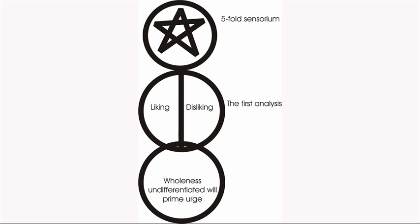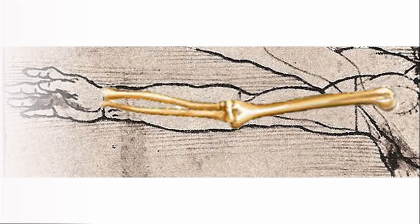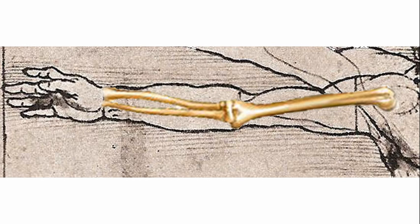We have this wholeness — this undifferentiated will, this prime urge, so difficult to get at — then we have the liking and disliking of it, the first analysis, then the five-fold sensorium of it. We have the same thing in the upper arm bone: the part nearest the body is the most unified, then the two bones — the ulna and the radius — which are the bones of choice. You'll find that when people are making up their minds, they frequently go like this, unconsciously rotating the bones.